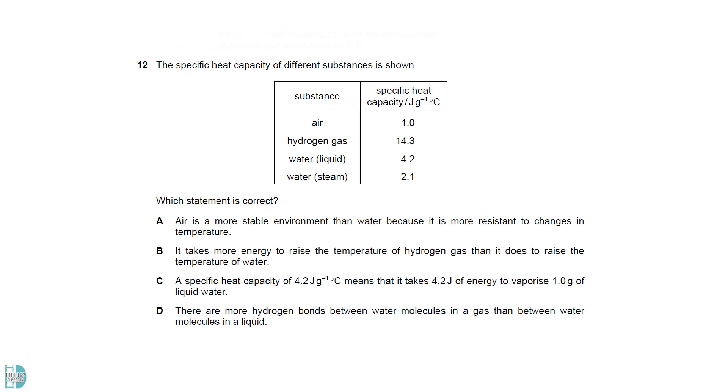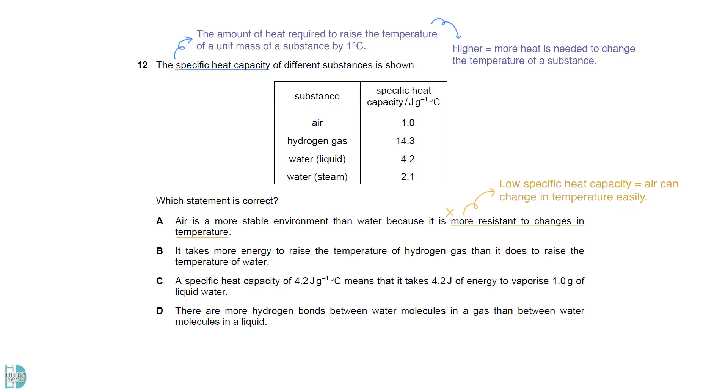Specific heat capacity is the amount of heat required to raise the temperature of a unit mass of a substance by one degree Celsius. The higher it is, the more heat is needed to change the temperature of a substance. A is wrong because a low specific heat capacity means that air can change in temperature easily. B is correct as water has a higher specific heat capacity.